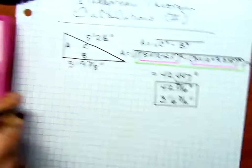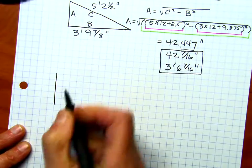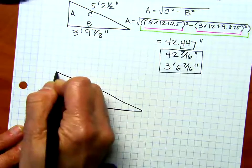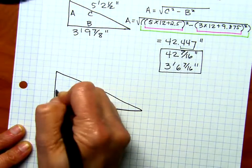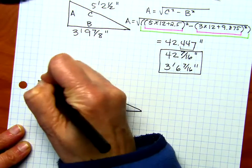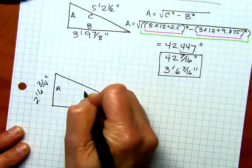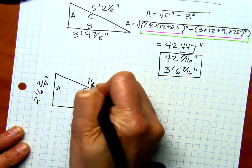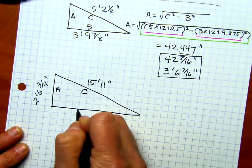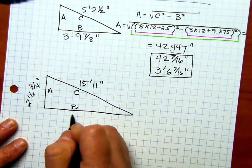So, let's look at another one. So, in this one, we're going to solve for B. And A is going to be 2 feet 6 and 3 quarter inches. C is going to be 15 feet 11 inches. Notice there's no fraction there, and that's okay. And then I've got B there. I don't know what that is.